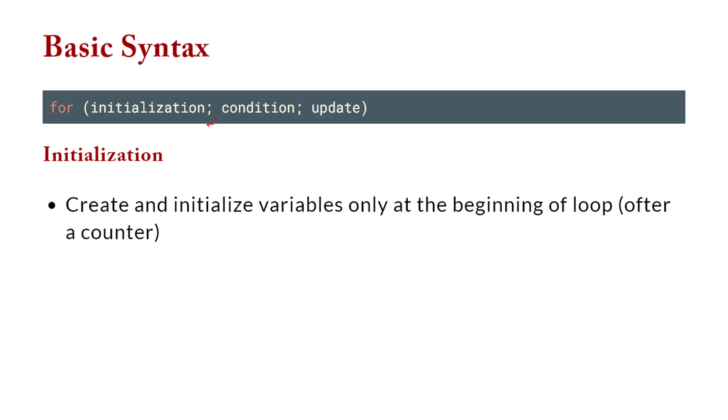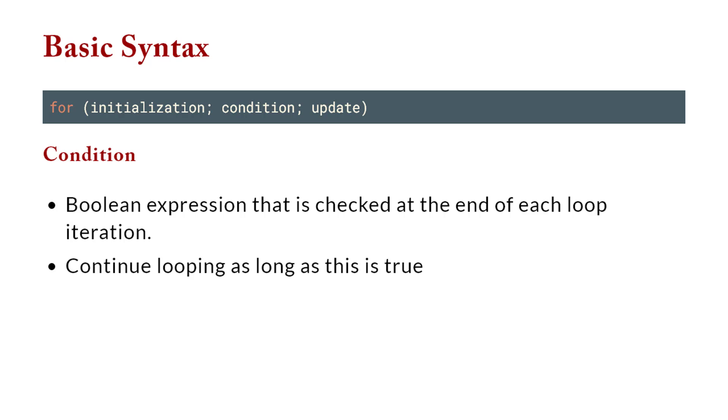So the initialization is where you create your initial variable. If you want to go through a range of numbers, you might say I'd like to start my integer at zero. Your condition is then when do I stop my loop? So this is your boolean expression, meaning I would like to count to ten. So I'm going to count going through this loop as long as whatever number is less than ten.